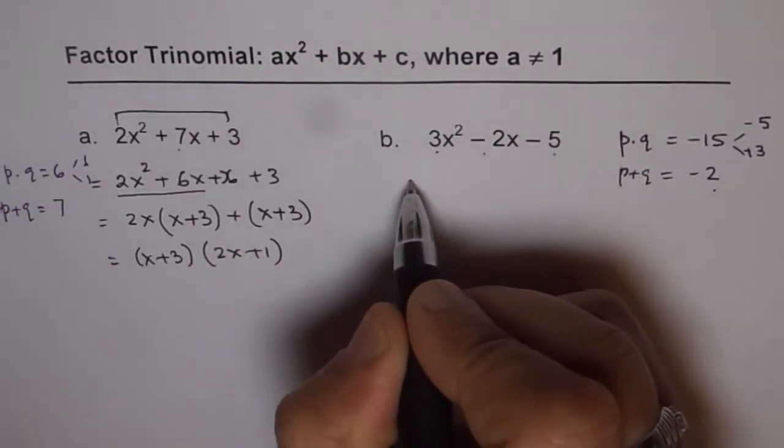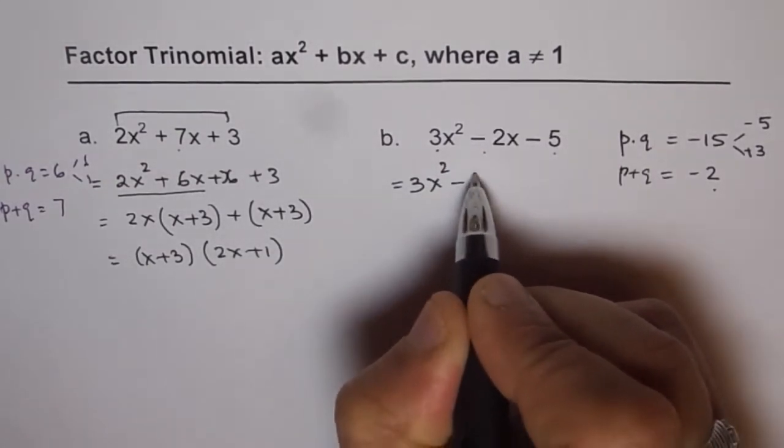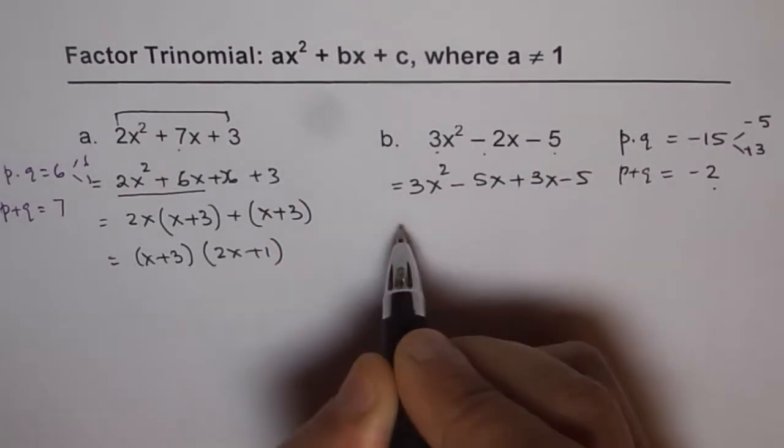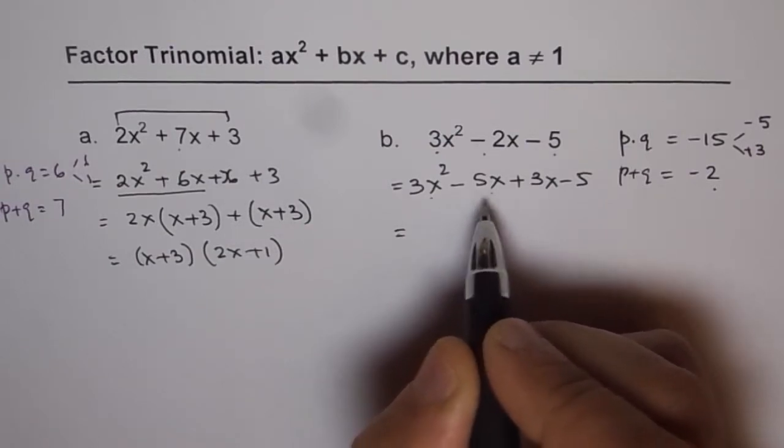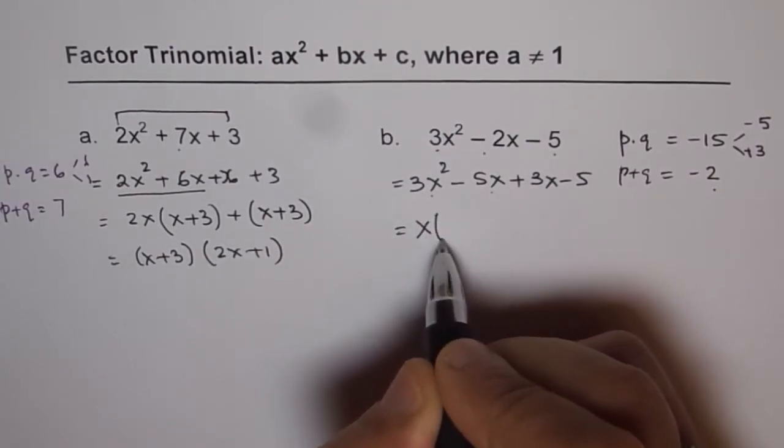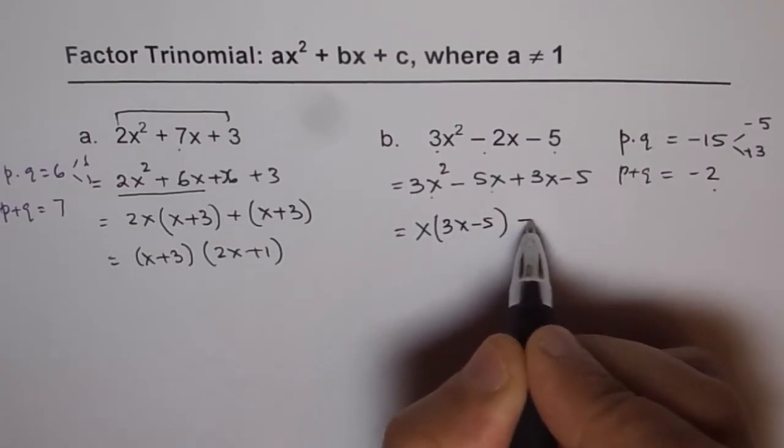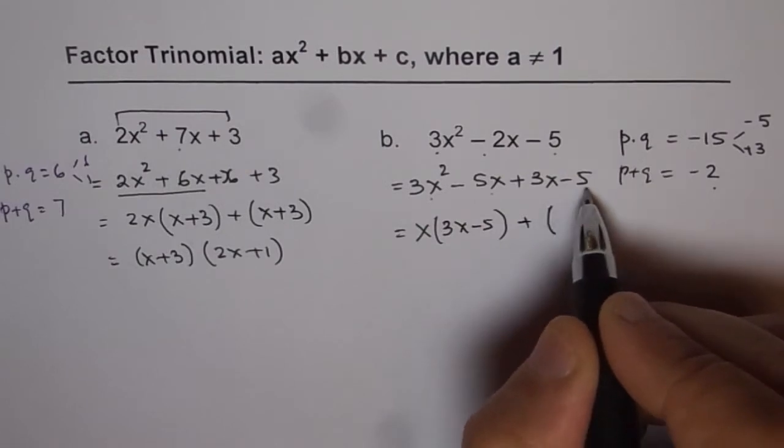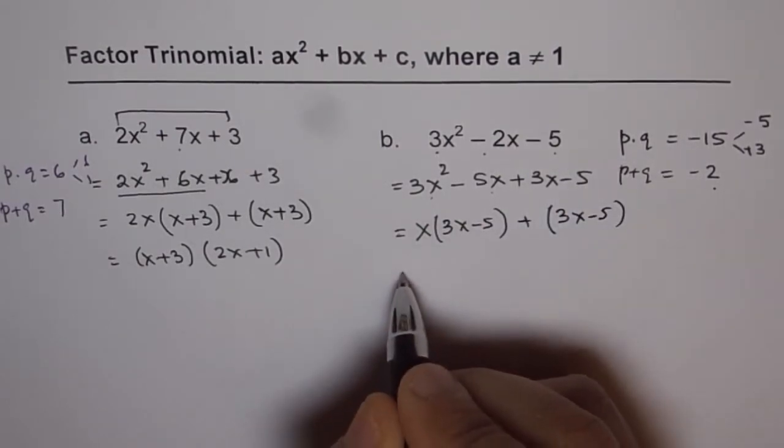So we will write this expression as 3x² - 5x + 3x - 5. Now, from the first two terms, we can factor out x. x, 3, x - 5. And the other two terms, we can put them in bracket as 1 is a common factor between them, 3x - 5.